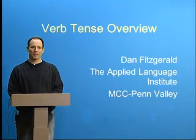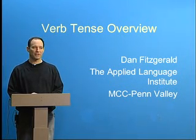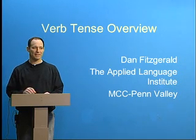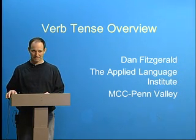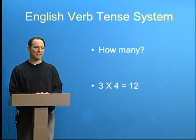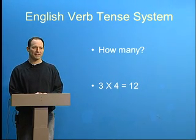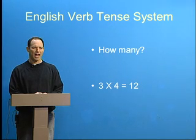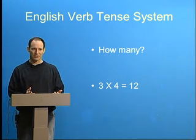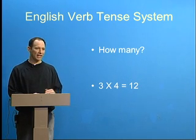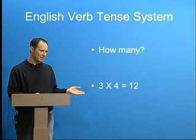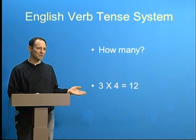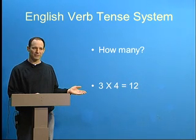Today, I'm going to provide a quick overview of the English verb tense system. When we think of the English verb tense system, the first question some people think about is: how many verb tenses do we have in English? The answer: 3 times 4 equals 12 — 12 verb tenses.